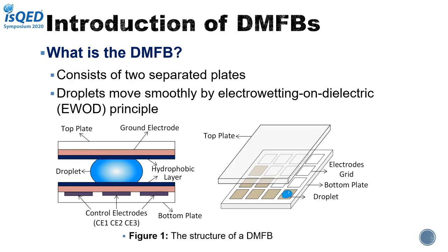Please look at figure one. It shows the structure of a DMFB. A DMFB consists of two separate plates. Droplets move between the plates. Controlling electrodes are distributed on the top and bottom plate. Based on the electrowetting-on-dielectric principle, droplet movement can be controlled by controlling whether the electrode is energized or not. According to this principle, operations such as dispensing, mixing, and splitting can be realized.